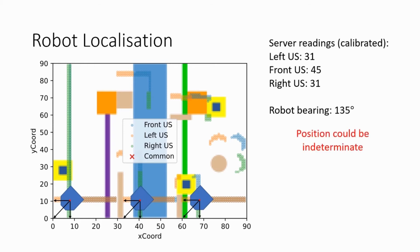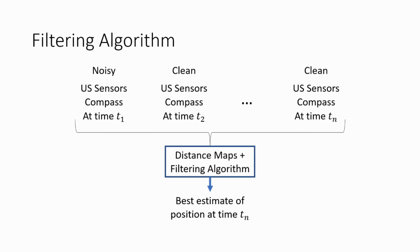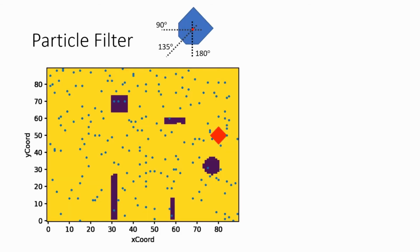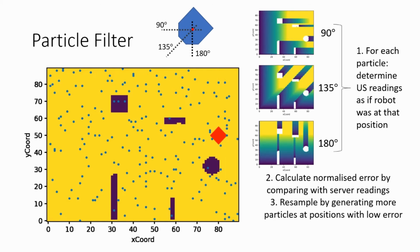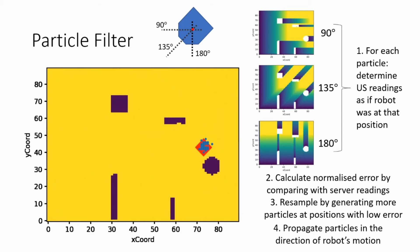However, for certain conditions, the robot's position could be indeterminate. Furthermore, the ultrasound sensors may be blocked by another robot in a 1v1 match, making the triangulated position inaccurate. My approach to solve these problems was to use a filtering algorithm to give a best estimate by considering past and current readings. We start by generating a uniform distribution of particles as possible robot positions. For each particle, we determine the expected ultrasound readings using our distance maps, then calculate a normalized error by comparing these to the server readings. We then resample and redistribute the particles so that positions with lower error have more particles. Finally, we propagate particles in the direction of the robot's motion. These four steps repeat for each program cycle. The particle filter gives us the correct position by considering past sensor readings.